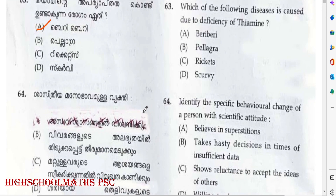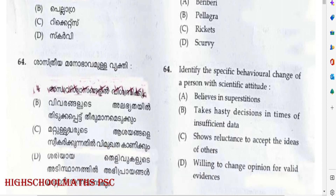Question about scientific temperament: A person with scientific mindset believes in truths established through scientific inquiry, avoids blind beliefs, and is willing to change opinions for valid evidences. Answer: Option D — Willing to change opinion for valid evidences.